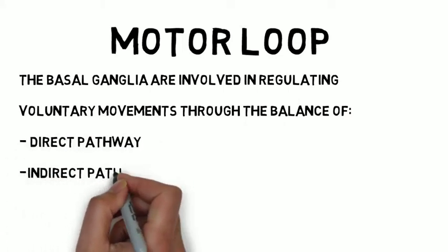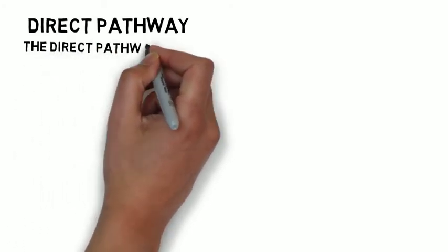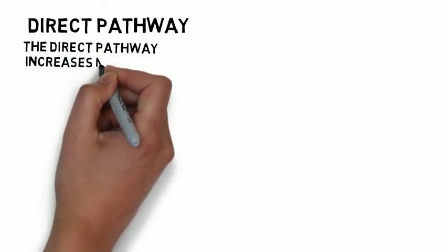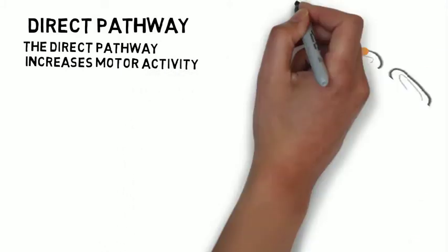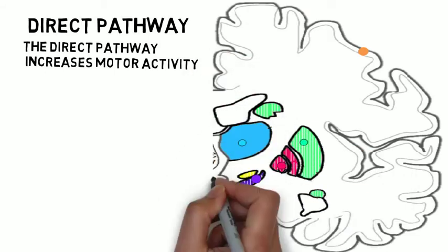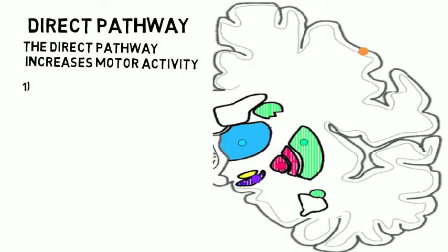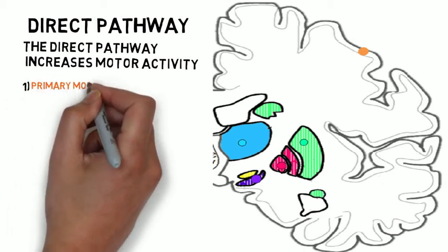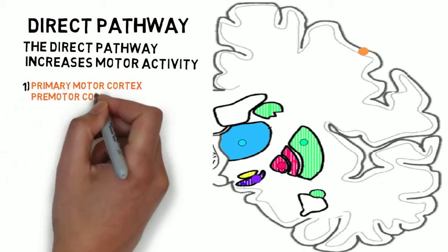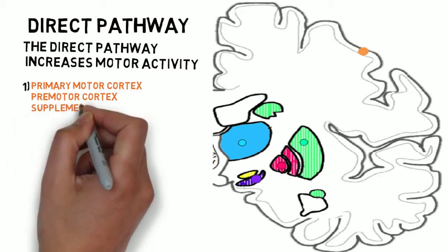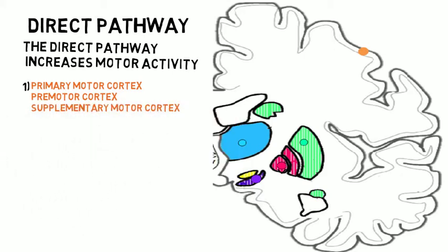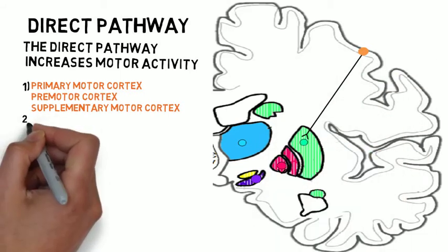We will begin by discussing the direct pathway. This pathway functions to increase the excitatory drive from the thalamus to the cortex, ultimately increasing motor activity. In this pathway, neurons arise from the primary, premotor, or supplementary motor cortexes and form synapses with medium spiny neurons in the striatum, typically the putamen.